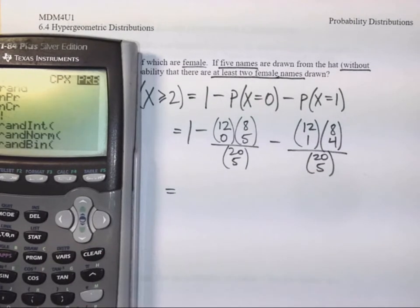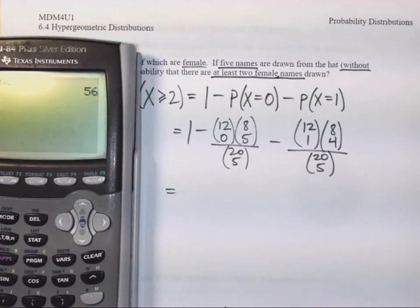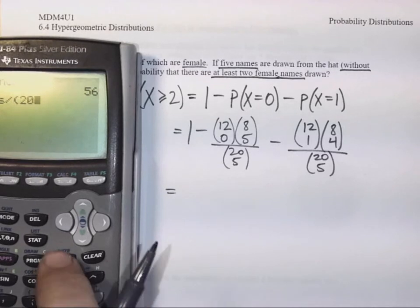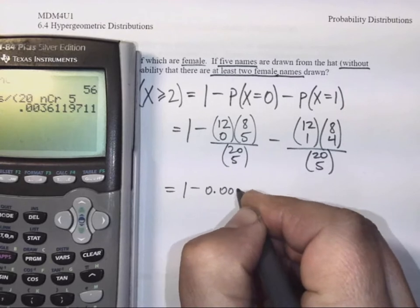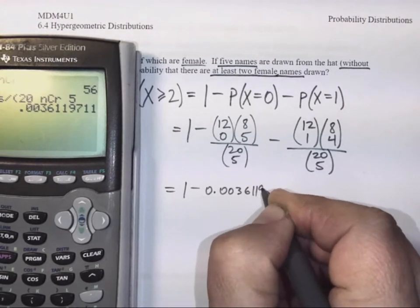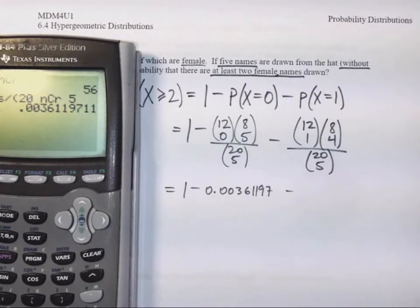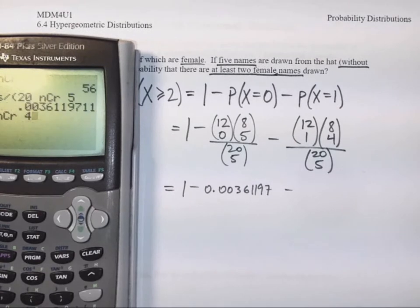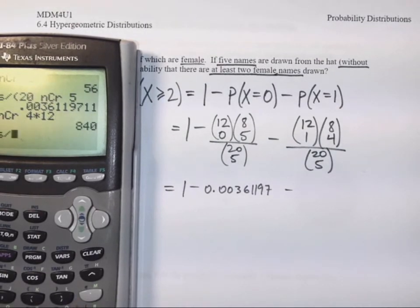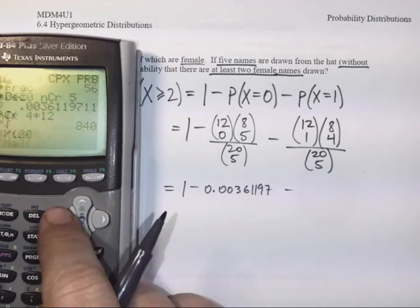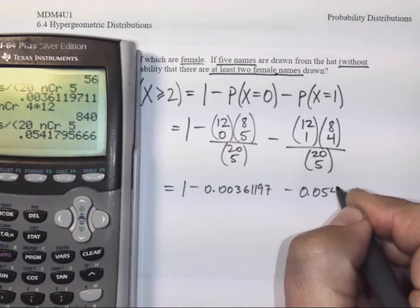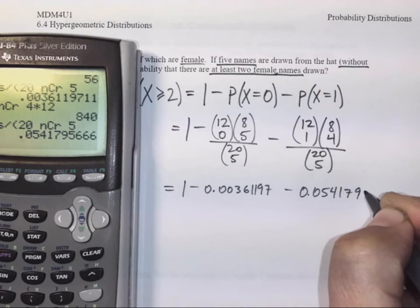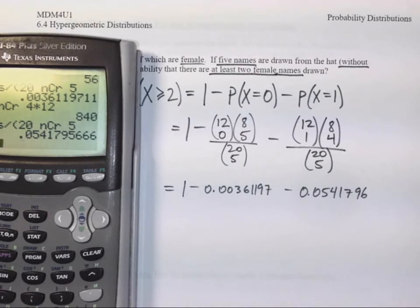Okay, let's calculate these separately and see what we get. We have 8 choose 5 divided by 20 choose 5, which is 0.00361197. And then we have 8 choose 4 times 12 divided by 20 choose 5, which is 0.0541796.